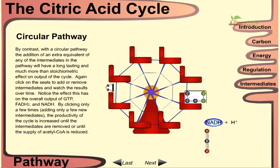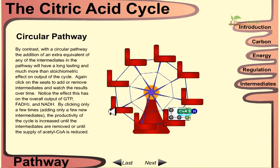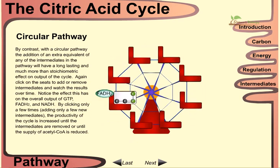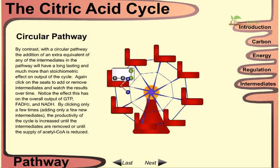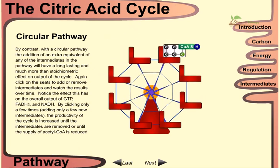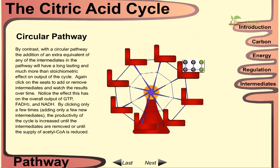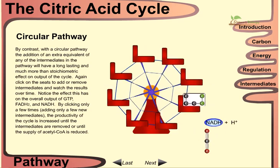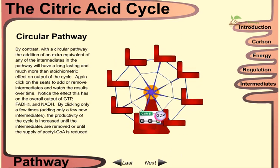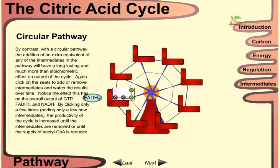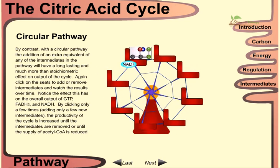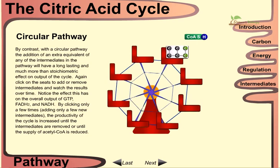By contrast, with a circular pathway, the addition of an extra equivalent of any intermediate will have a long-lasting and much more than stoichiometric effect on the output of the cycle. Adding just a few new intermediates increases the productivity of the cycle until those intermediates are removed or the supply is exhausted.